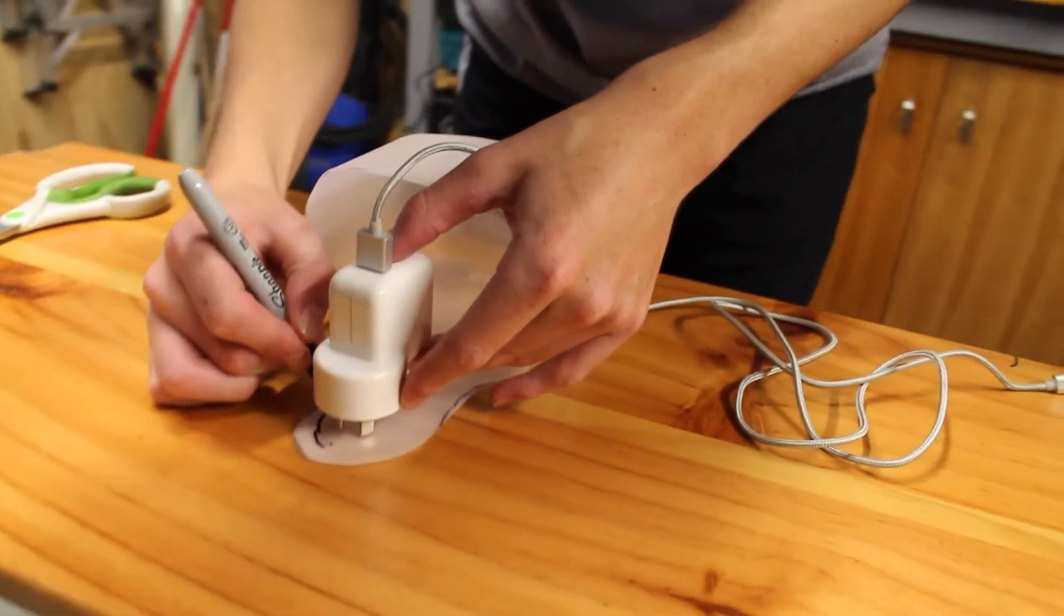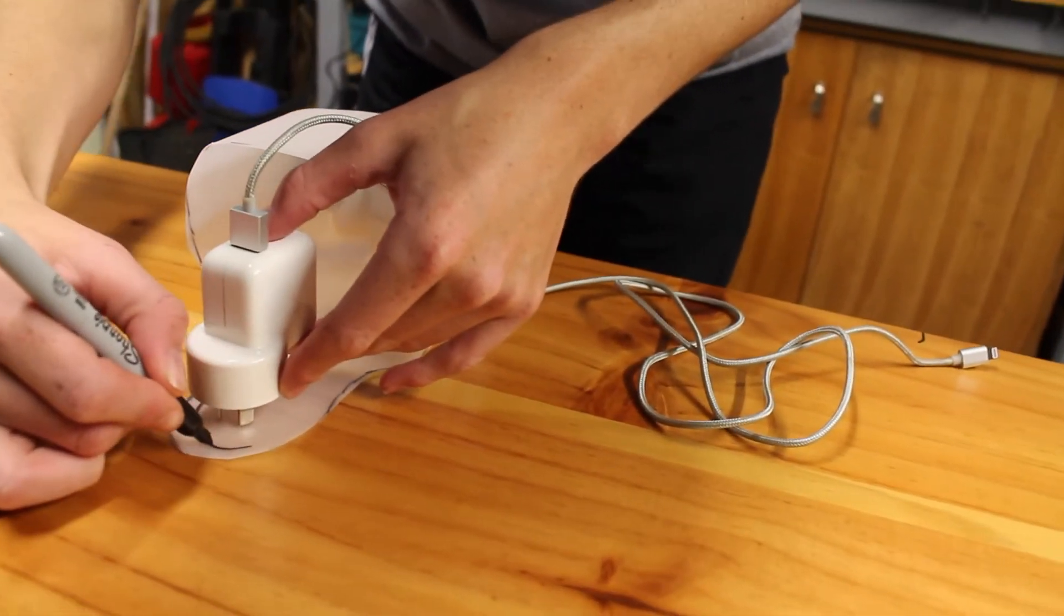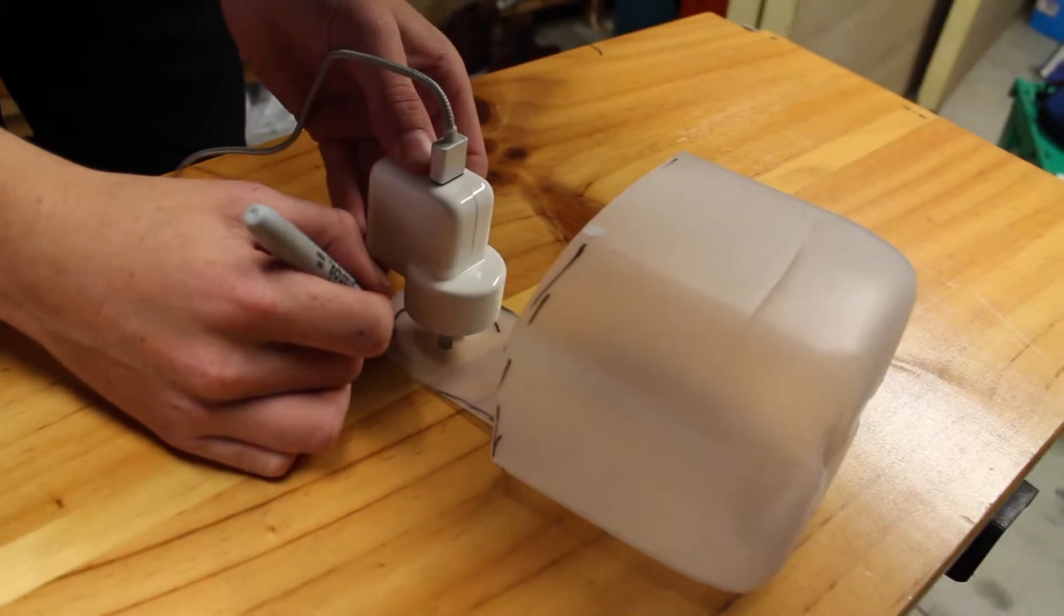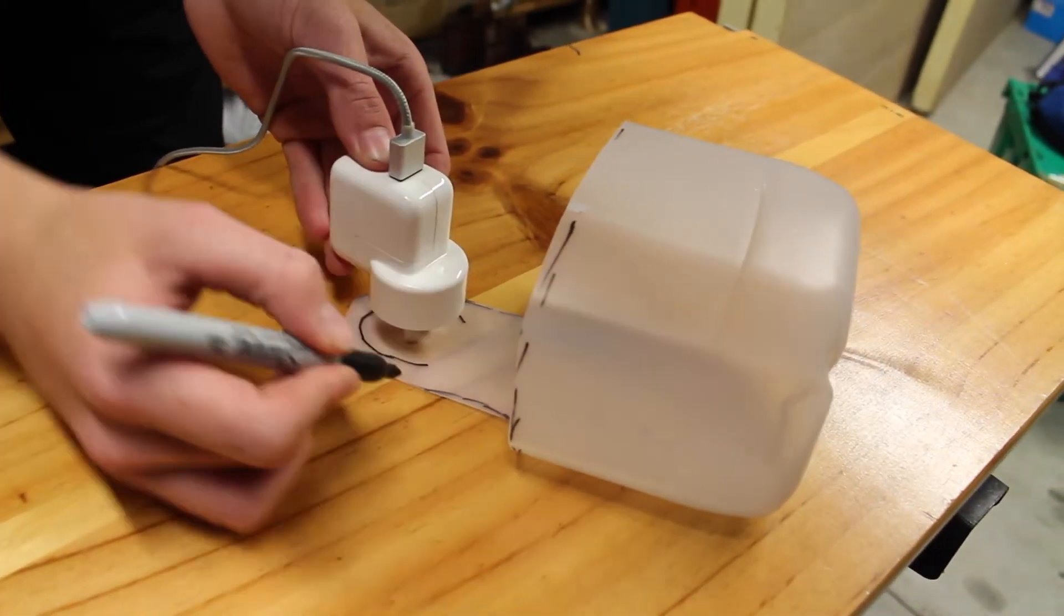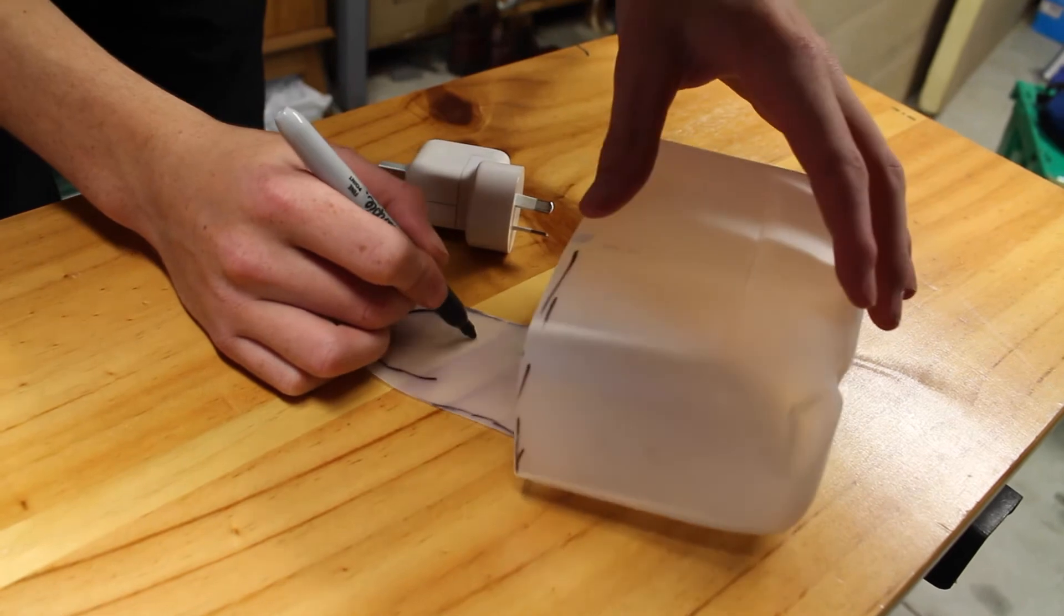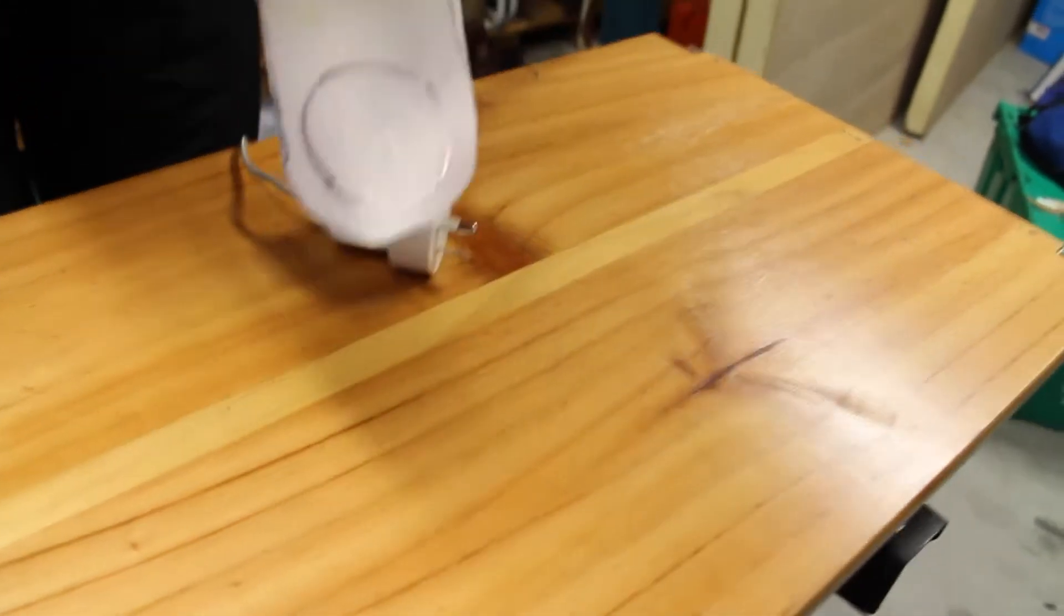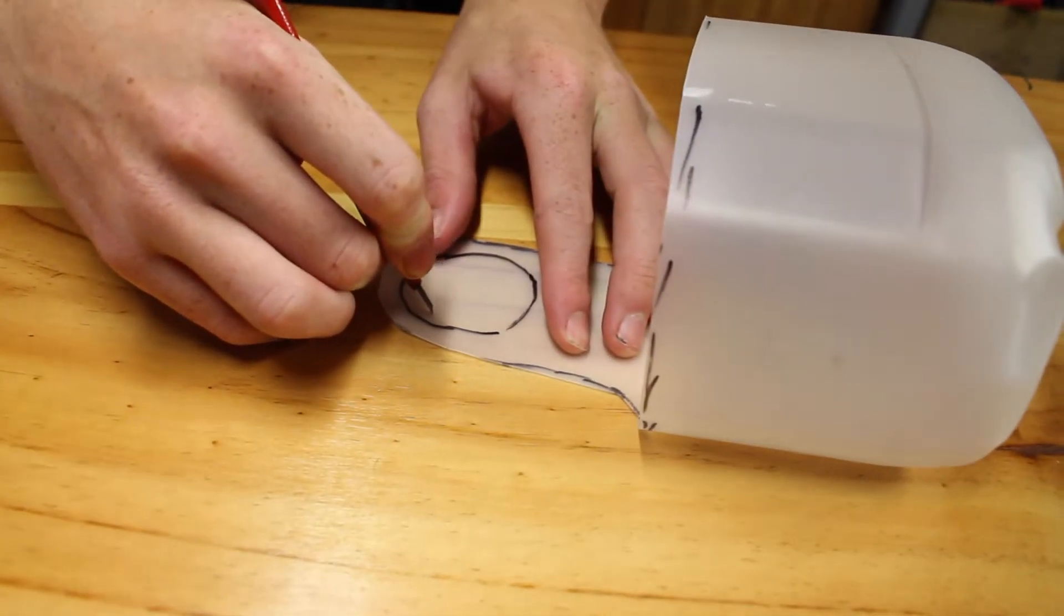So it can fit nice and snug in the socket in the wall, and it should look like that. Now I've just got a sort of craft knife and I've cut a little slit in it.